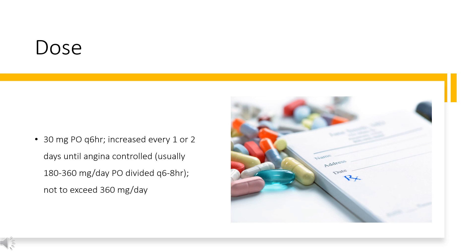Paroxysmal supraventricular tachycardia: 0.25 mg/kg (average adult dose 20 mg) IV direct over 2 minutes. After 15 minutes, may repeat bolus by administering 0.35 mg/kg actual body weight over 2 minutes (average adult dose 25 mg), if first dose tolerated but response inadequate. Some clinicians suggest additional doses Q15 minutes; use weight-based dosing for lower body weight patients. Continuous infusion: 10 mg/hour initially, increased to no more than 15 mg/hour for up to 24 hours.